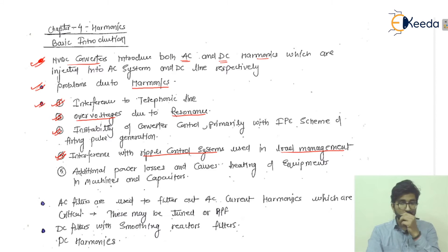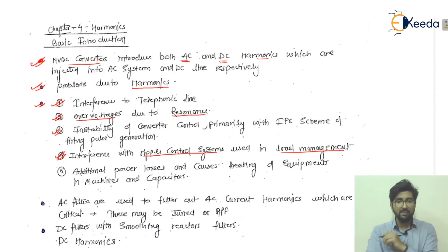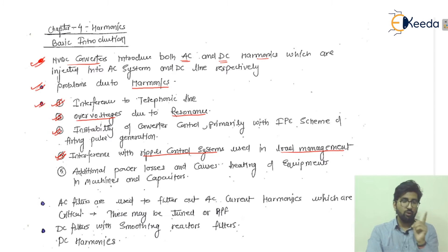There is also interference with the ripple control systems used in load management. When harmonics arise, they cause interference with these ripple control systems.